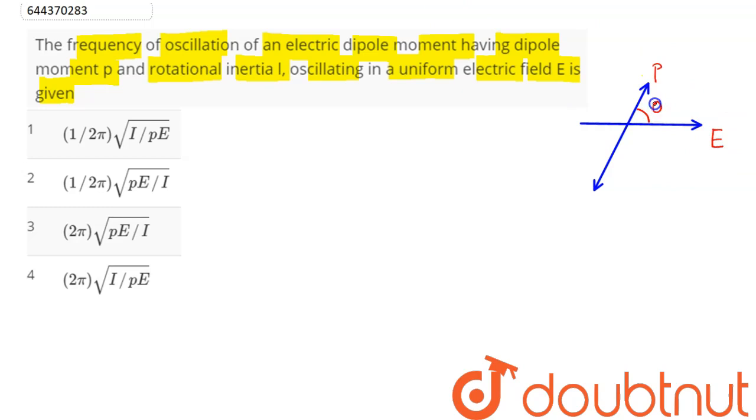an angle theta in anti-clockwise sense, the torque acting on this dipole will be p × E × sin theta in clockwise sense. That is, we can say the torque is anti-parallel to the angular displacement.